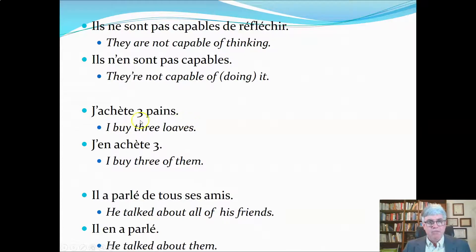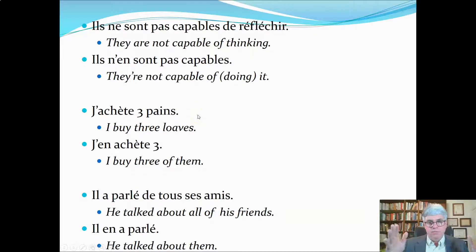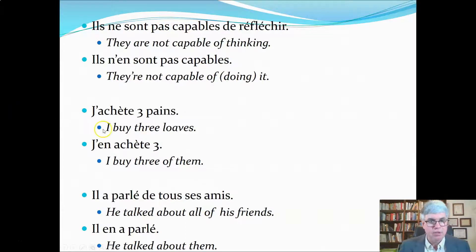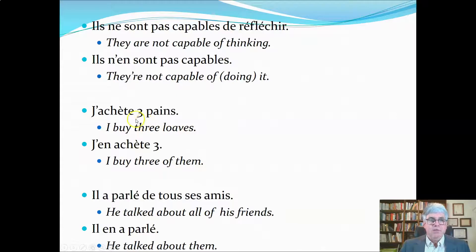'J'achète trois pains' — I buy three loaves. 'Pain' is a general word for a loaf of bread; a baguette weighs 250 grams and a pain weighs 400 grams. When we have a number followed by a noun, we can replace the noun with 'en': 'j'en achète trois' — I buy three of them. You can't just say 'j'achète trois'; you always need the 'en' there: I buy three of them.